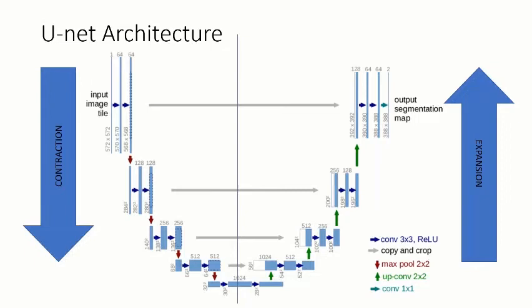In contrast to the contracting path, it increases the size of the feature map with a factor of 2. It also does a concatenation with the corresponding high-resolution feature maps coming from the contracting path. These operations are represented by the long gray arrow.